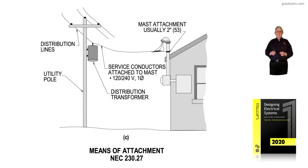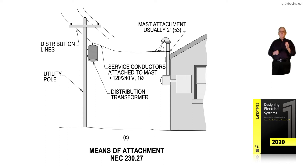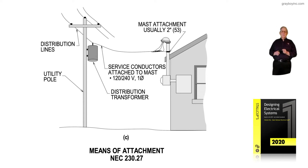This illustration still deals with the means of attachment and is the final illustration to review, in accordance with NEC 230.27. Notice the service drop from the utility pole and the distribution lines where the transformer is set. The drop is overhead to the riser that passes through the overhang, which is usually always at least a two-inch conduit.